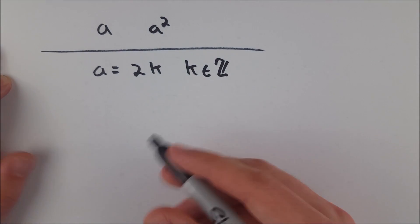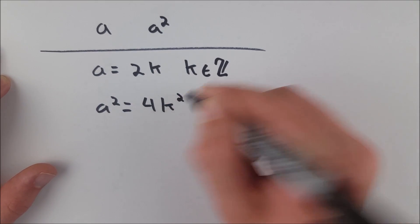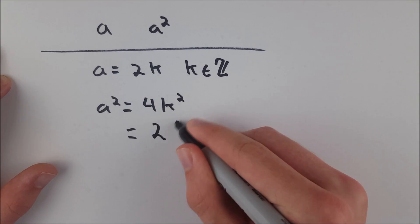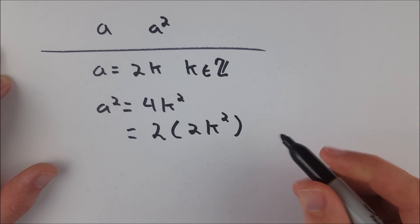So therefore we know that a squared is equal to 4k squared. And then we can factor out a 2. So a squared is equal to 2 multiplied by 2k squared.